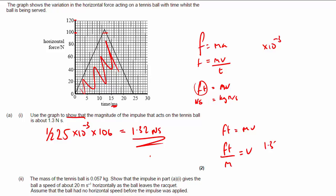So FT I've just calculated, 1.32, M is 0.057. Calculating this gets me 23.2 meters per second. Again, it's a show that question, so it's approximately this. I know I'm on the right track, and that is the correct value.